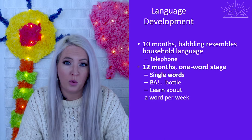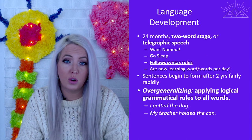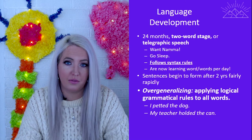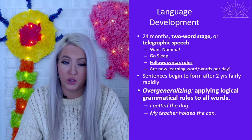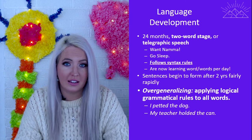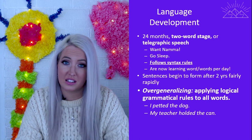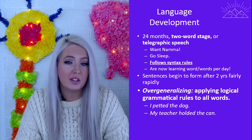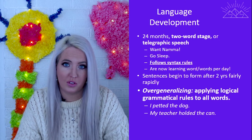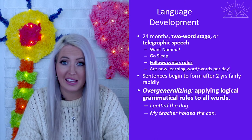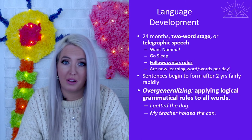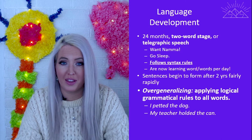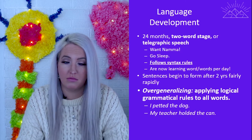By about 24 months, children reach the two-word stage, also known as telegraphic speech, conveying simple messages like 'want nana' for 'I want banana' or 'go sleep' for 'I want to go to sleep.' These sentences already follow correct syntax rules. From this point they start forming sentences very rapidly. We do see mistakes at this age through a concept known as overgeneralization — as they learn rules like using '-ed' for past tense, they apply it to all past tense, saying 'I petted the dog' instead of 'I pet the dog.'